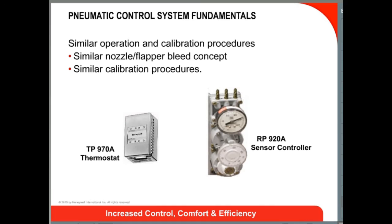The control applications and operating characteristics of all pneumatic thermostats and controllers are very similar. The TP970 and RP920 controllers appear quite different, but both are bleed type controllers with internal nozzle flapper assemblies. The calibration procedures for the TP970s and the RP920s are surprisingly similar — if you can troubleshoot and calibrate one, you can troubleshoot and calibrate the other. This will be demonstrated in a later video covering the calibration procedures of these controllers.